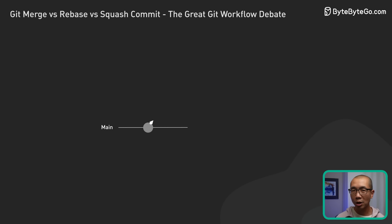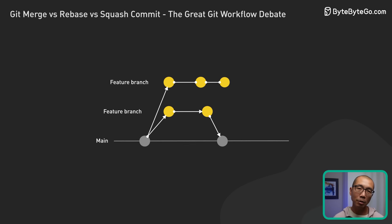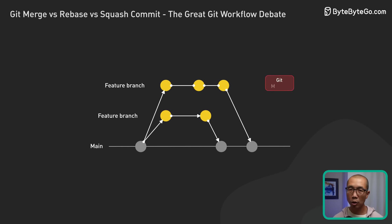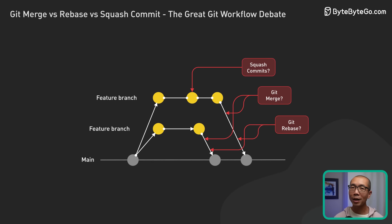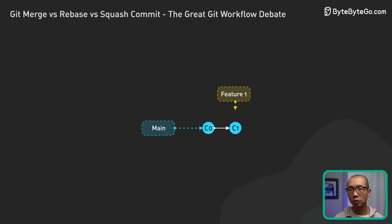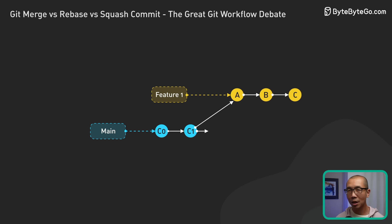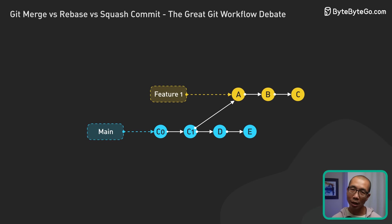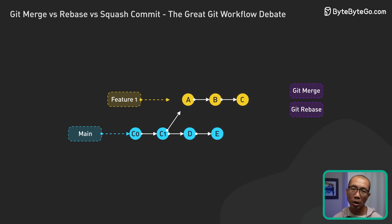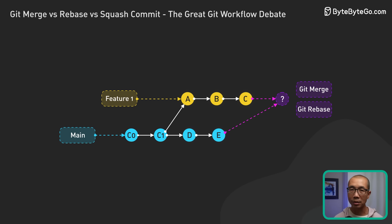If you ever work on a git project with a bunch of branches, you've probably had to figure out how to get changes from a feature branch back to the main branch, or keep the feature branch up to date with the main branch. The big question is: should we use git merge, git rebase, or squash our commits? Let's pull back the curtain and see what's really going on with each one. So let's say we've created a new feature branch from main. We've added commits A, B, and C on the feature branch, while the main branch has added commits D and E — like two branches of a tree growing in different directions. Keeping our feature branch up to date with main is a crucial part of the git workflow, and we can do this with either git merge or git rebase.